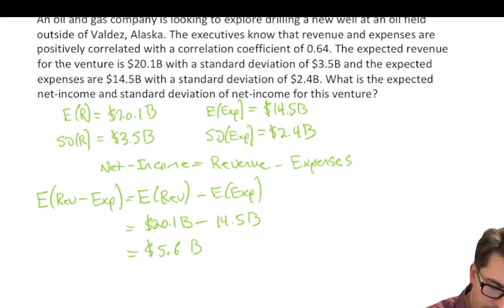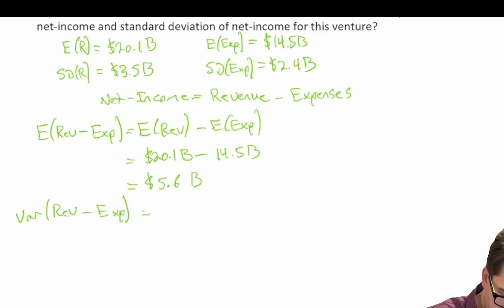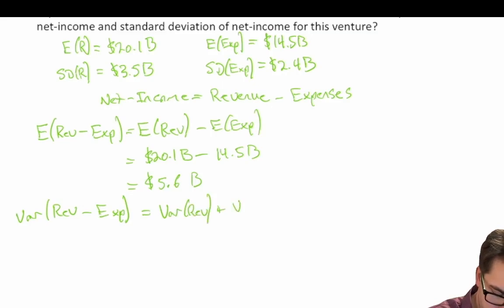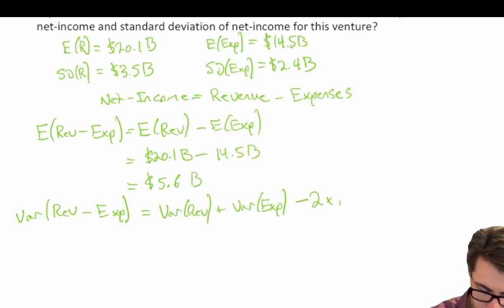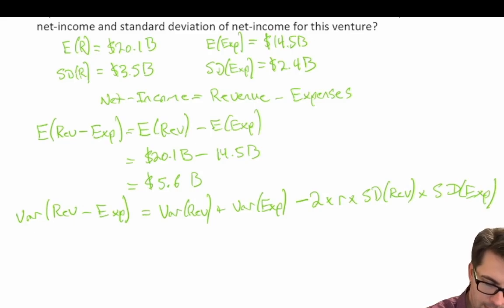Our standard deviation we now need to calculate, but we need to be cognizant that there is a correlation coefficient of 0.64. Let's first calculate our variance. The variance of revenue minus expenses equals the variance of revenue plus the variance of expenses minus 2 times r times the standard deviation of revenue times the standard deviation of expenses.